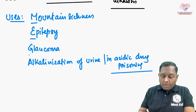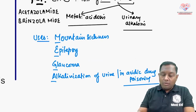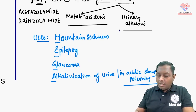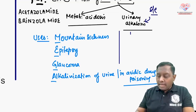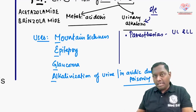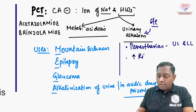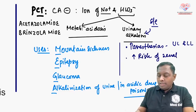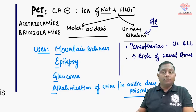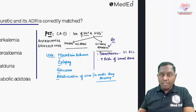Apart from metabolic acidosis and urinary alkalosis, carbonic anhydrase inhibitors can also cause paresthesias of the upper and lower limbs, and they can increase the risk of renal stones.